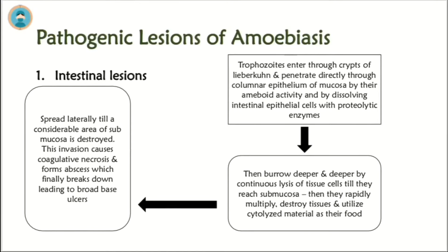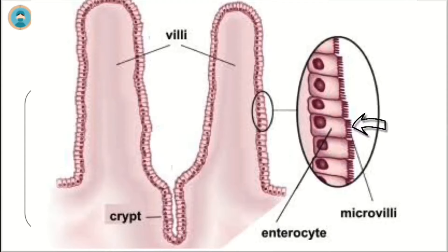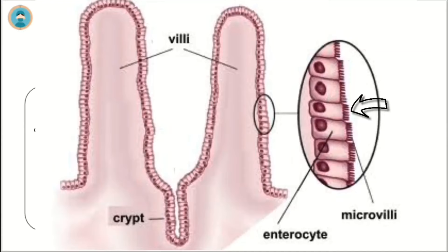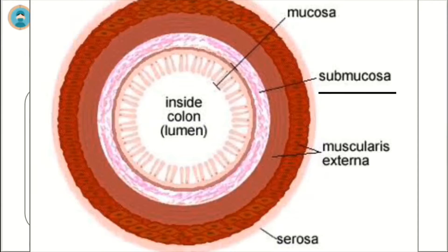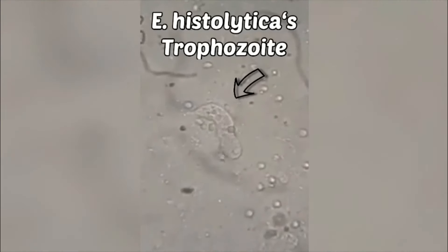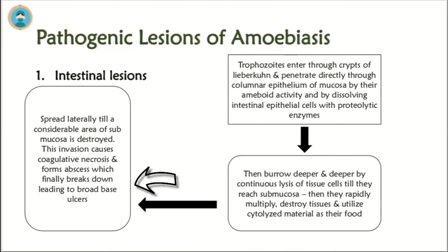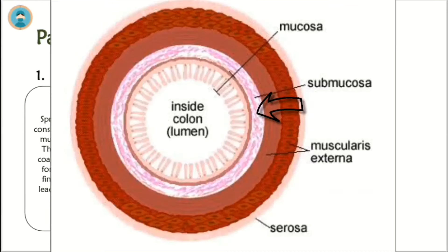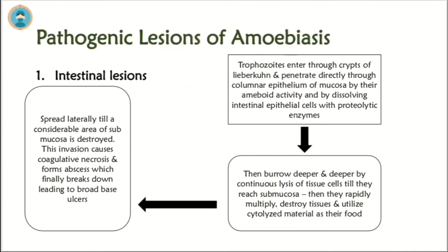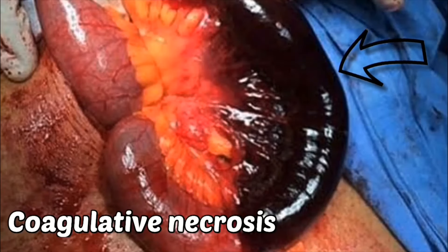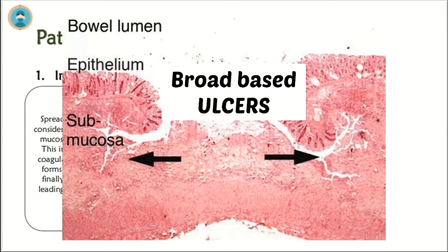Pathogenic lesions of amoebiasis — intestinal lesions: Trophozoites enter through the crypts and penetrate directly through the columnar epithelium of the mucosa by their amoeboid activity and by dissolving intestinal epithelial cells with proteolytic enzymes. They then burrow deeper and deeper by continuous lysis of tissue cells until they reach the submucosa. They then rapidly multiply, destroy tissue, and utilize cytolyzed material as food. Spread laterally until a considerable area of submucosa is destroyed. This invasion causes coagulative necrosis and forms abscesses which finally break down, leading to broad-based ulcers.